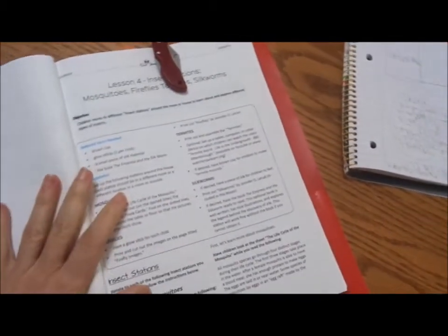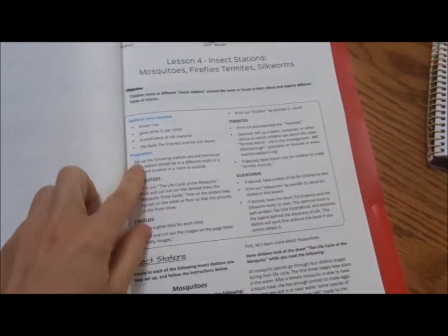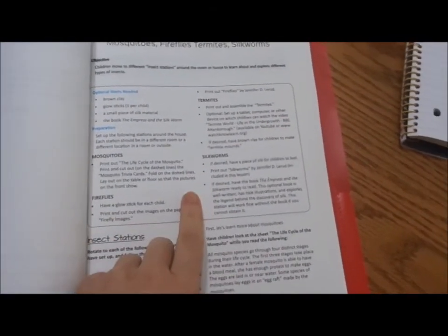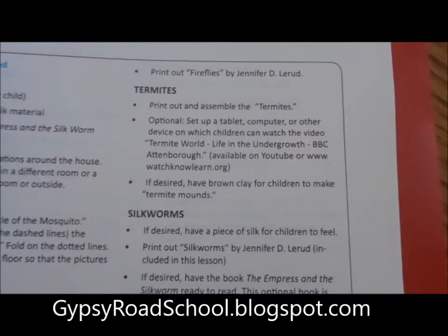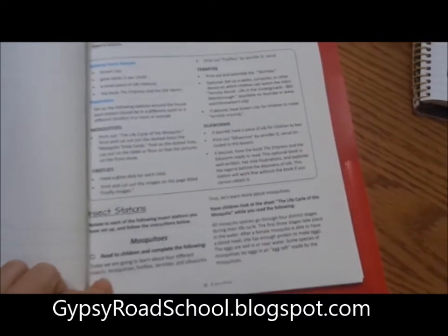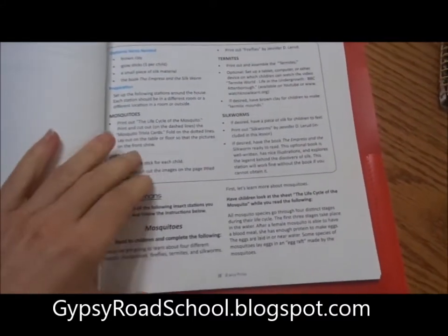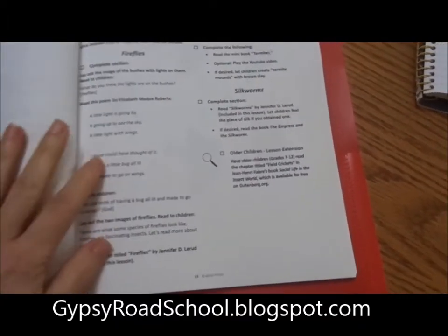We're going to look at lesson four. It tells us which materials we're going to need specifically for this lesson, what we're going to be studying, and what exactly you need to do ahead of time. In this lesson we had insect stations. We set up stations around the room, and each one featured an insect such as mosquitoes, termites, fireflies, and silkworms.